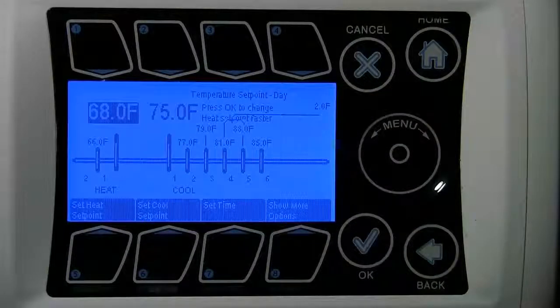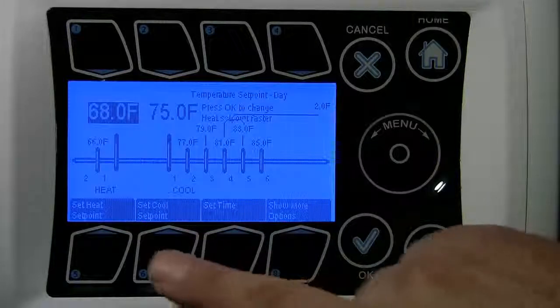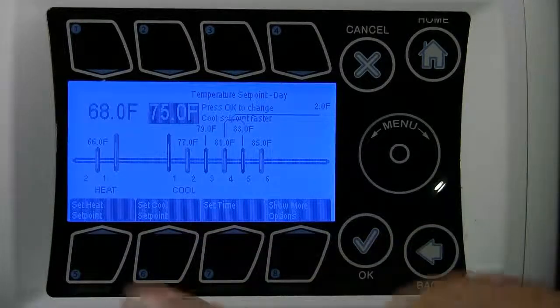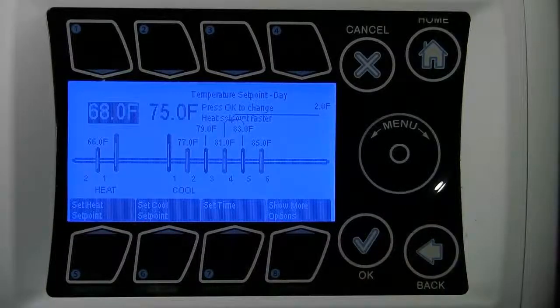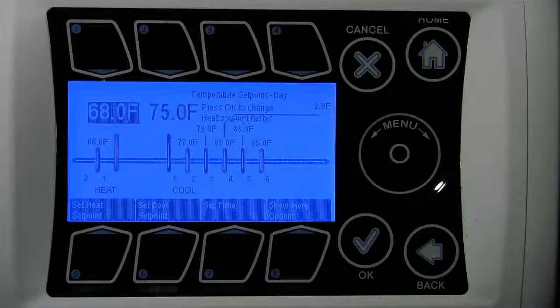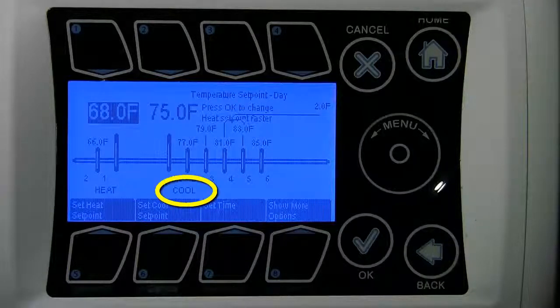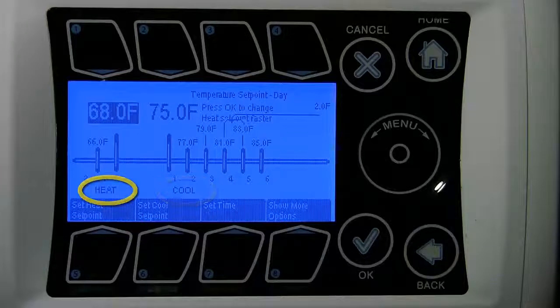Whenever the temperature within your greenhouse moves above the cool set point or below the heat set point and falls outside the normal temperature range, the iGrow 100 series controller will enter cooling or heating stages to bring it back in line.